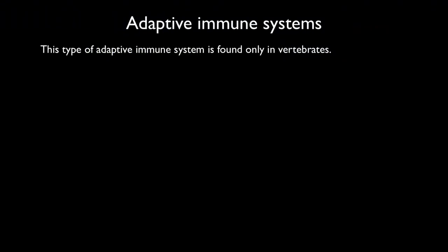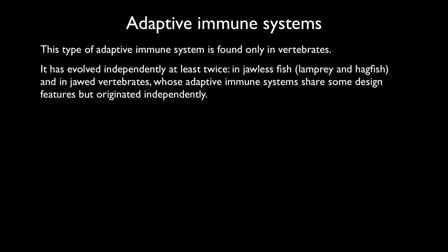The vertebrate immune system of the type discussed here is found only in vertebrates, but it also exists as analogs in some invertebrates. In vertebrates it evolved at least twice: once in jawless fish — lampreys and hagfish — and then in the jawed vertebrates. The two systems share some design features, but they originated independently.